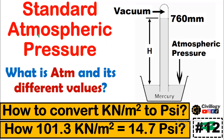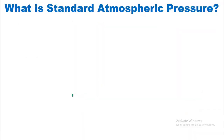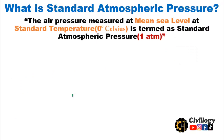Before going to the conversion, we will try to understand what is standard atmospheric pressure — what is ATM and its different values. Standard atmospheric pressure is the air pressure measured at mean sea level at standard temperature, which is zero degrees Celsius. It is termed as standard atmospheric pressure and can be written as 1 atm.